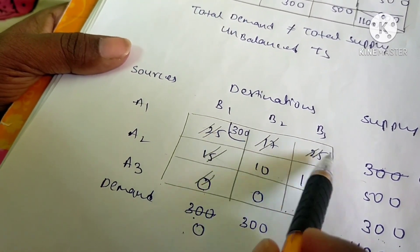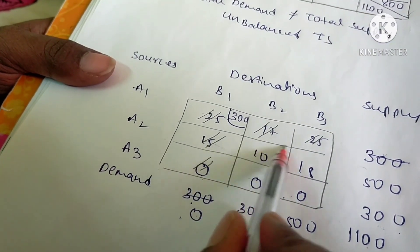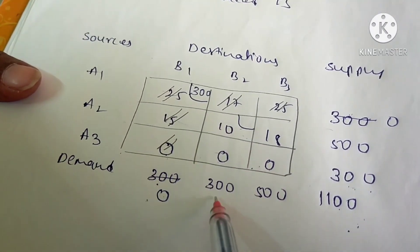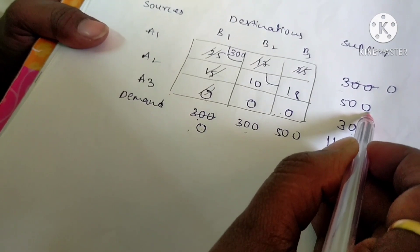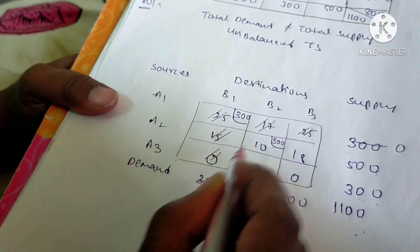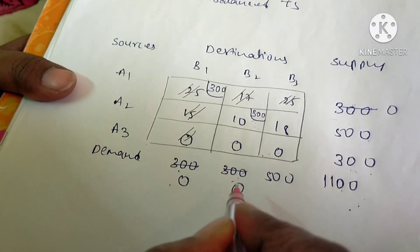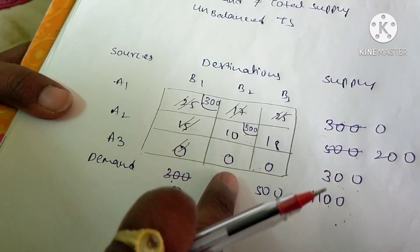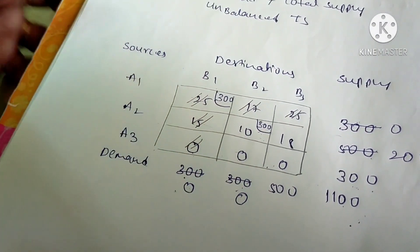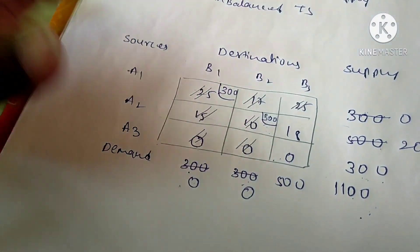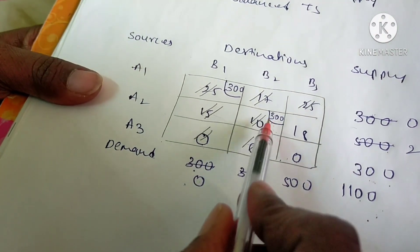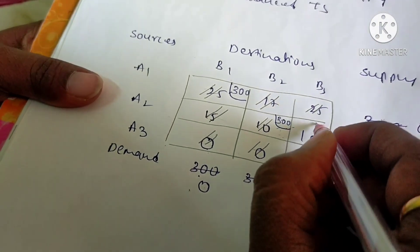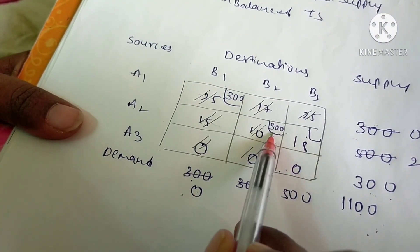Since we got zero on both sides, leave both the row and column and move to the next. The actual remaining transportation starts from the new corner. From the corresponding demand and supply, select the least number, which is 300. Allocate that here. Deduct: zero on the demand side and 500 minus 300 equals 200 on the supply side. Leave that complete column and move to the next row.